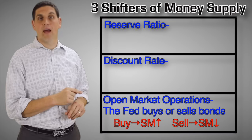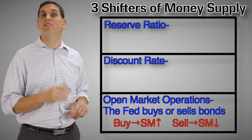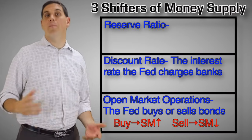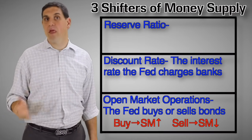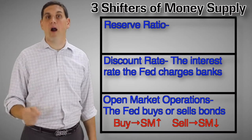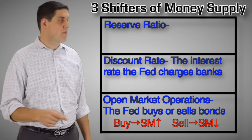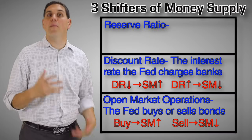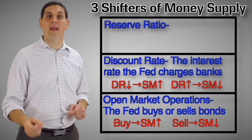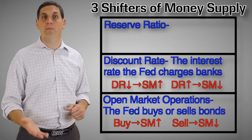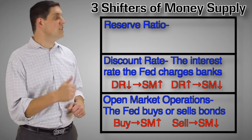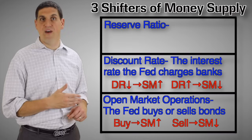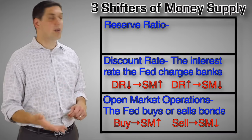Now let's talk about the discount rate. The discount rate is the rate that the Fed charges commercial banks to borrow money. If a bank needs money, they can either borrow from another bank or borrow from the Fed. The rate they pay from the Fed is the discount rate. If the Fed decreases the discount rate, that'll make it easier and cheaper for banks to borrow, increasing the money supply. If the Fed increases the discount rate, that'll make it harder and more expensive for banks to borrow, decreasing the money supply.